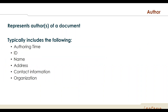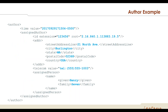Much like the patient demographics, CDA also allows you to represent detailed information about participants in a document, such as the author or signer. Authors in a document typically include the time the document was authored, IDs about the author such as the clinician's National Provider Identifier, perhaps their local employee ID, their name, address, contact information, and what healthcare organization they're representing. The author example has a lot of the same kind of information as the patient record — address, ID, telecom, and the person's name — and once you start authoring one of these, it's quite easy to do more.